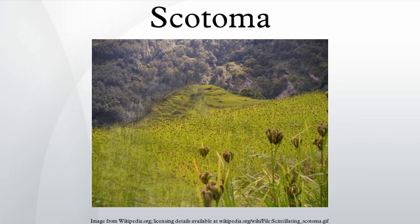A scotoma is an area of partial alteration in the field of vision, consisting of a partially diminished or entirely degenerated visual acuity that is surrounded by a field of normal vision. Every normal mammalian eye has a scotoma in its field of vision, usually termed its blind spot. This is a location with no photoreceptor cells, where the retinal ganglion cell axons that compose the optic nerve exit the retina. This location is called the optic disc.